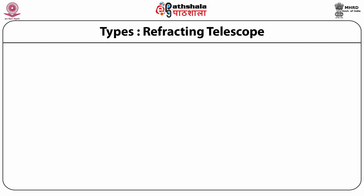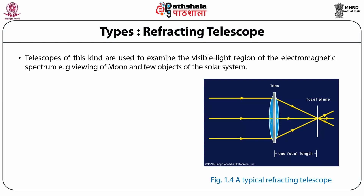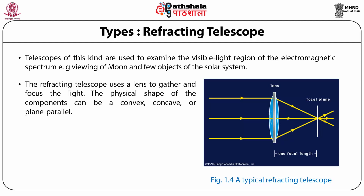Now we talk about the refracting telescopes. Telescopes of this kind are used basically to examine the visible light region of the electromagnetic spectrum, which covers all kinds of electromagnetic radiation from gamma rays to radio waves. For example, we use them to view the moon and objects of the solar system. The refracting telescope uses a lens to gather and focus the light. The physical shape of the lens components can be convex, concave, or even plain and parallel.